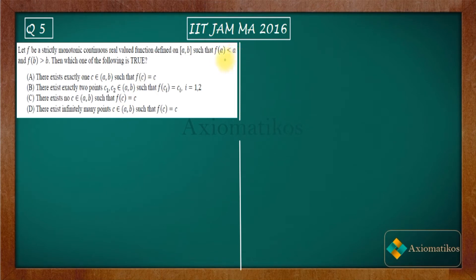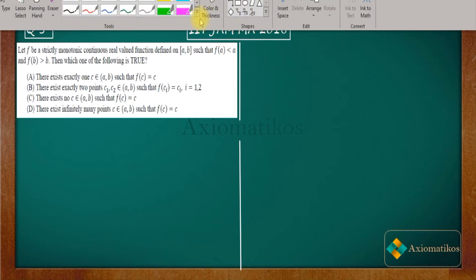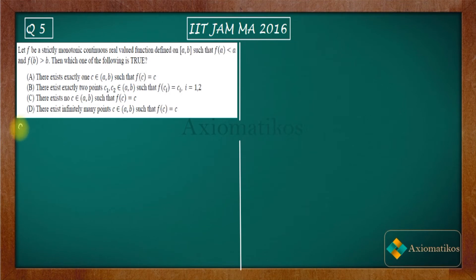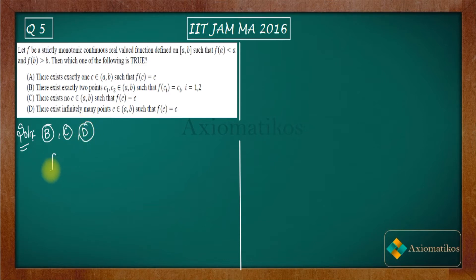What is given to us: f(a) < a and f(b) > b. Now let me start with a counter example to discard options B, C, and D. Consider the function f(x) = x²/2 on [1, 3].